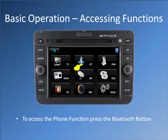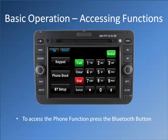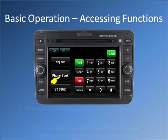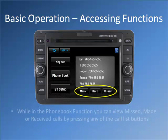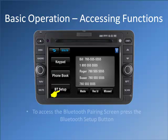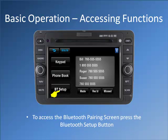To access the phone function, press the Bluetooth button. There are several screens in the phone function. The first screen that will appear is the call screen. To access the phone book, press the phone book button. While in the phone book function, you can view missed, made, or received calls by pressing any of the call list buttons. To access the Bluetooth pairing screen, press the Bluetooth setup button.